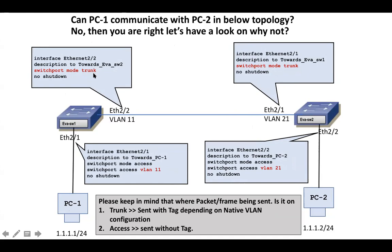While sending over the trunk, EVA Switch 1 will insert the VLAN tag so the remote end knows that traffic belongs to VLAN 11. As soon as EVA Switch 2 receives that frame tagged with VLAN 11, it checks if it has any port in VLAN 11. Looking at the topology, there are only two ports, and Ethernet 2/2 is not in VLAN 11. Therefore they are not able to communicate.